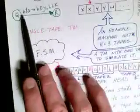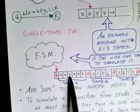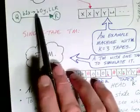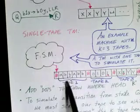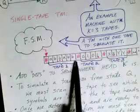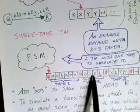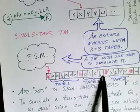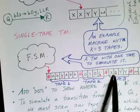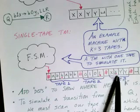So in this case, if we determine that we can take this transition, then our single-tape Turing machine is going to have to do a bunch of work. We're going to update the B with a B — so no work there. We update the 1 with a 0, so it'll go to where the tape head is and change that to a 0. Then we update the X with a Y, so it'll go to where the X is and update that with a Y.